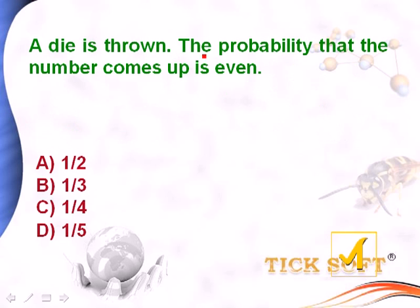A die is thrown. The probability that the number that comes up is even is: option a, 1 by 2; option b, 1 by 3; option c, 1 by 4; option d, 1 by 5.